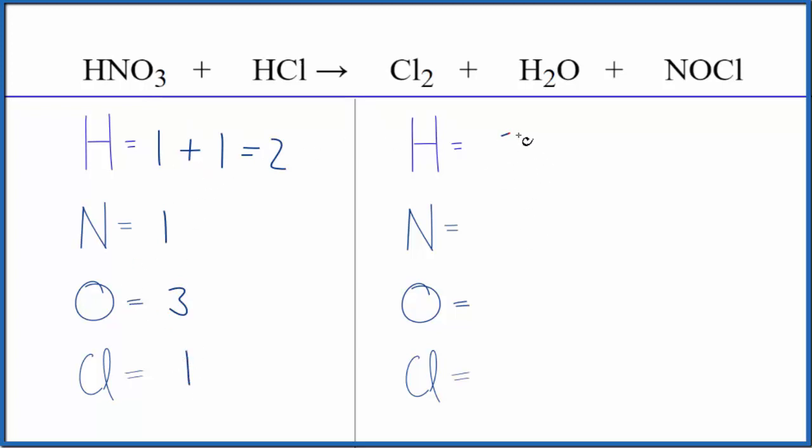On the product side we have the two hydrogens and one nitrogen. For the oxygen we have one here plus we have the one here that gives us two. For the chlorine we have two here plus we have the one here, so we have three chlorine atoms.